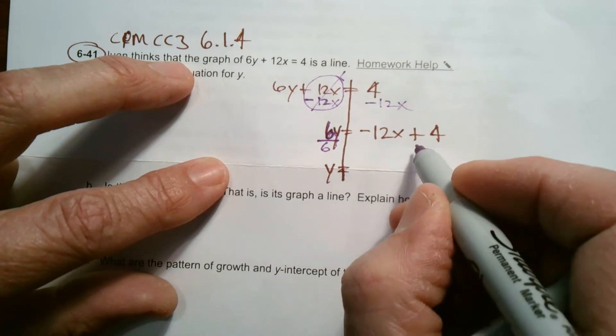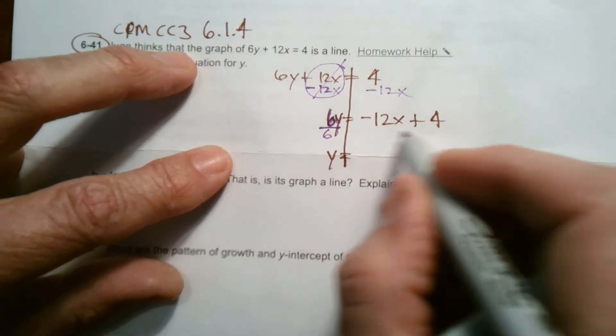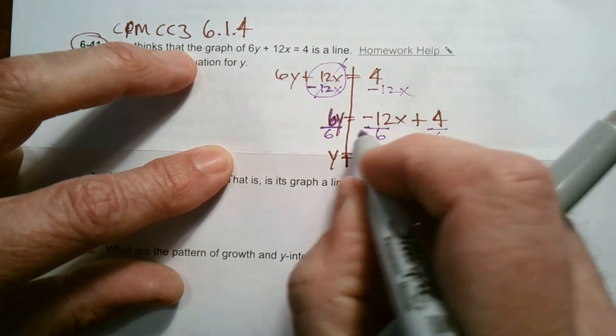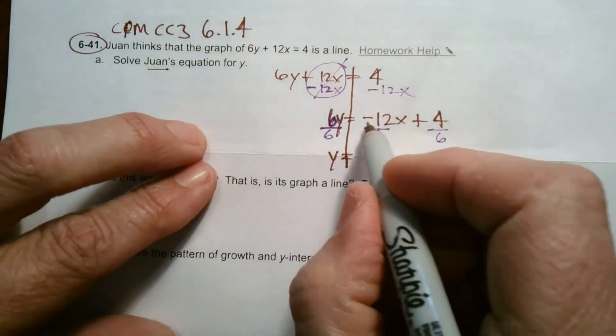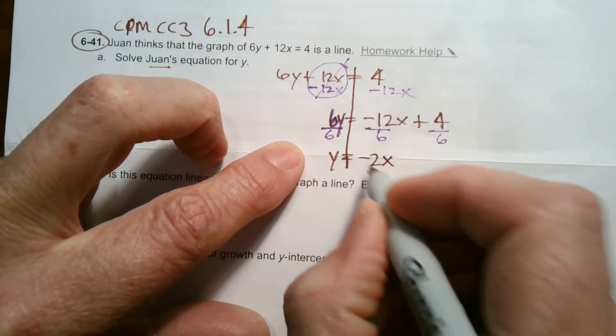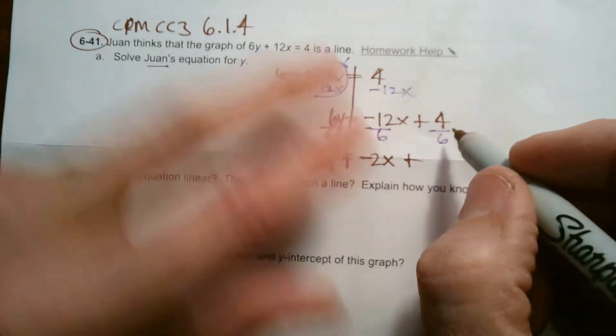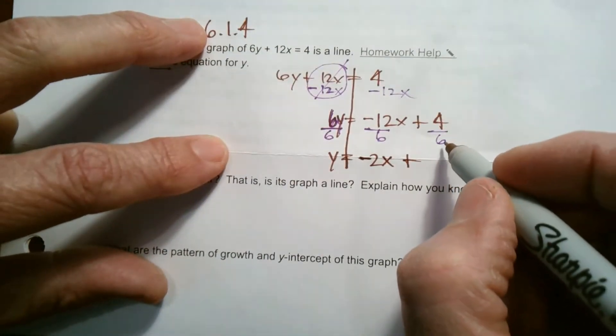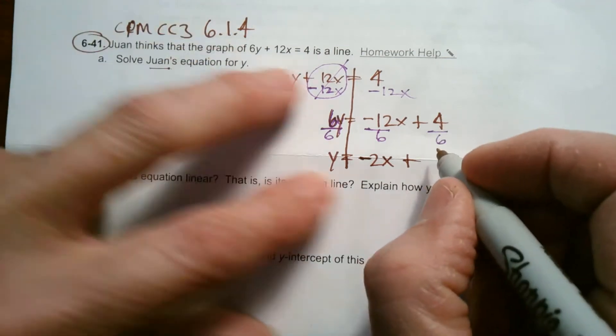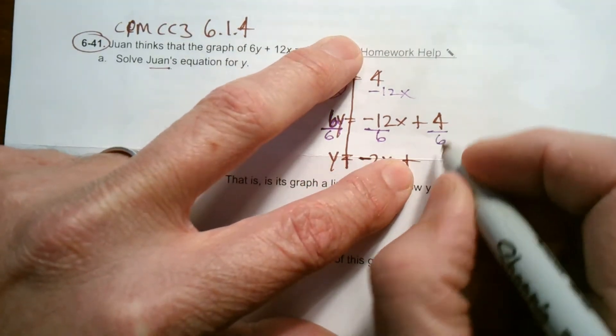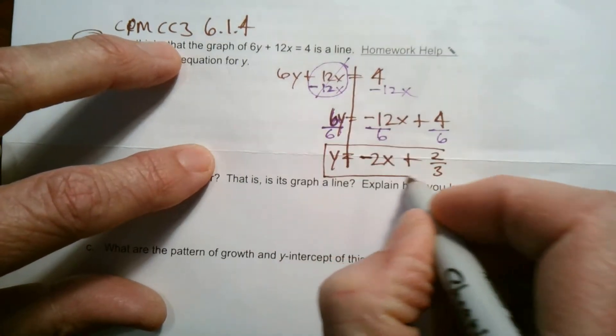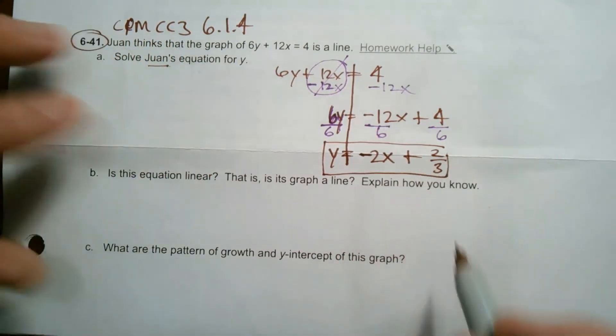But what I do to one side, I have to do to the other. I have to divide 6 into each term, not just one of the terms, but each term. So negative 12 divided by 6 gives me negative 2. That's negative 2x plus 4 over 6. Well, 4 doesn't divide by 6 evenly, so I leave it like a fraction but simplify if possible. I can divide top and bottom by 2 to get 2 thirds. So here's my equation: y equals negative 2x plus 2 thirds.